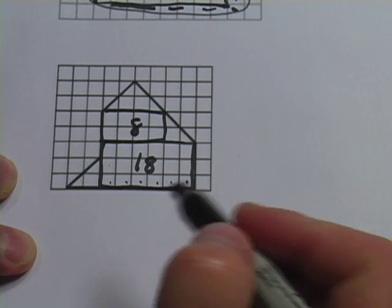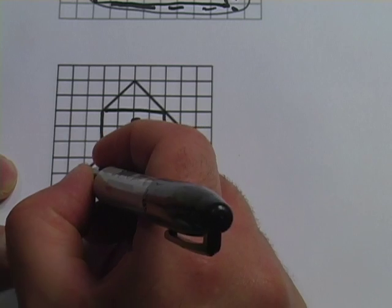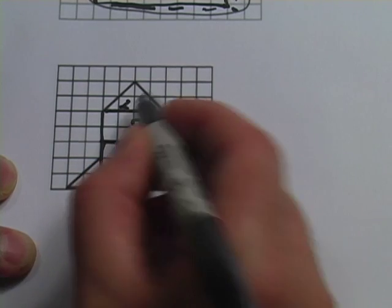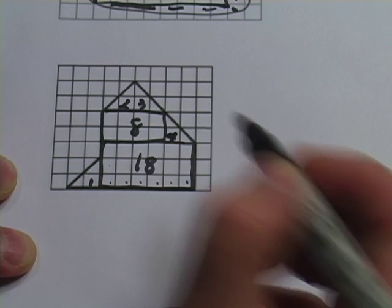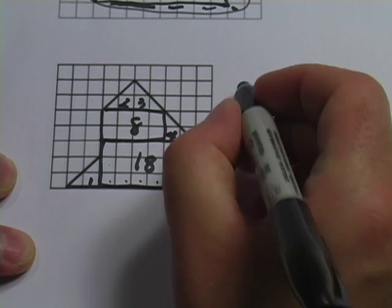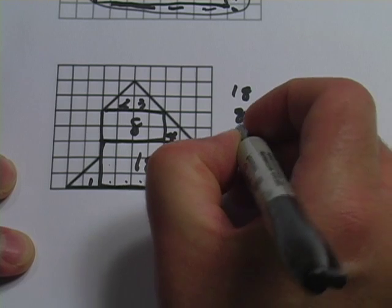And now I'm going to start counting the odd whole ones that are left off here. 1, 2, 3, 4. So we've got so far 18, 8, and 4.